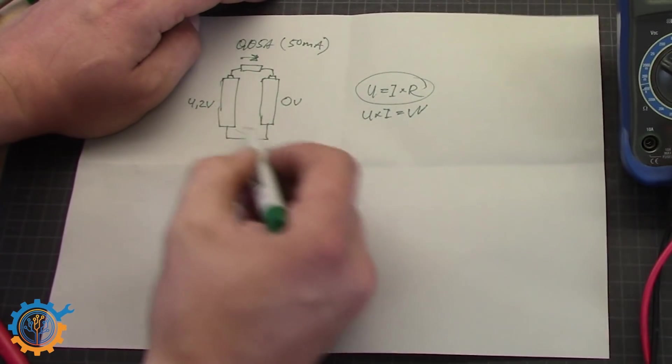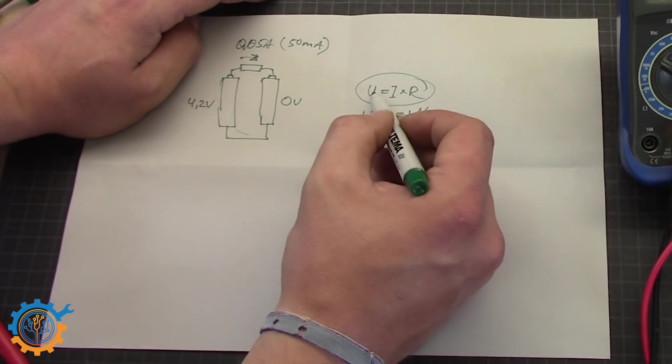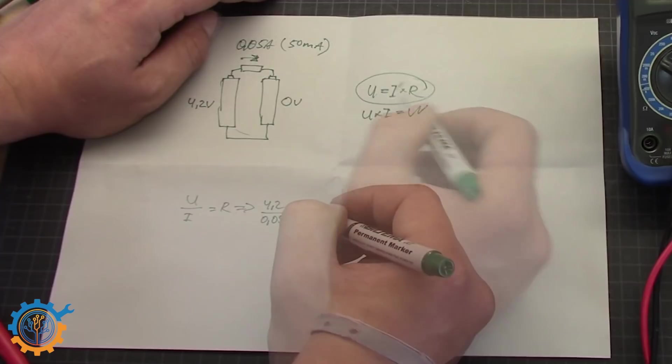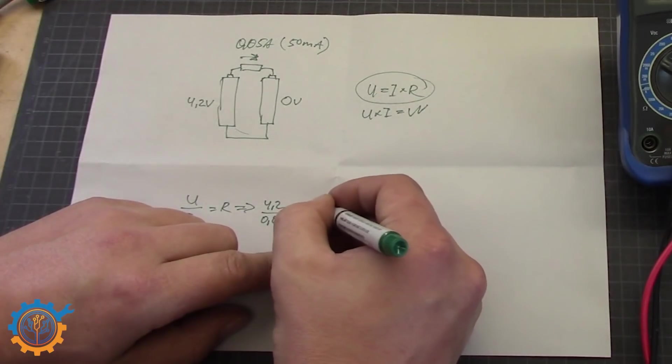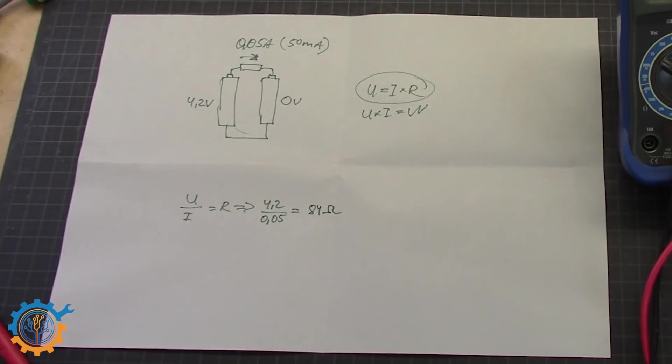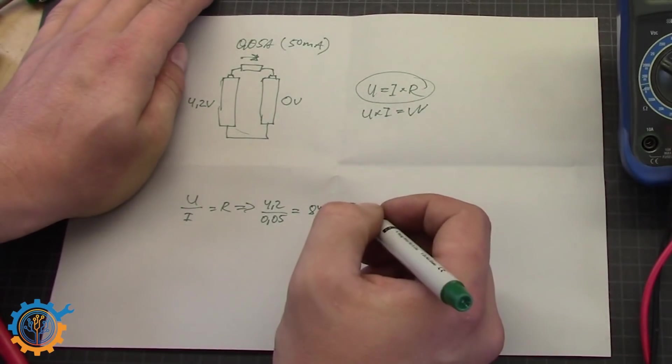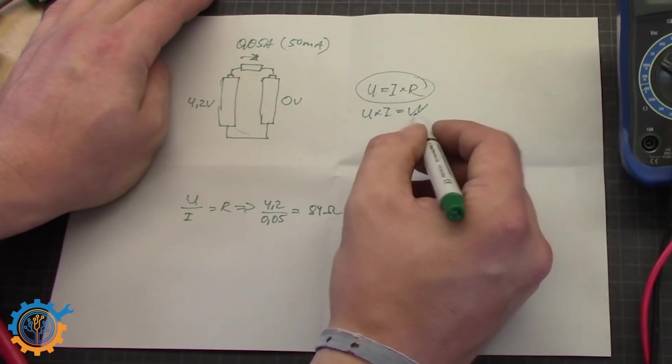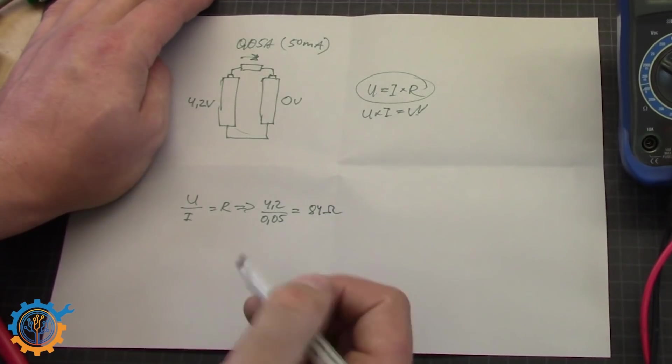And we know the current is 0.05A. The result of 84 ohm. To divide this to the current so it cannot exceed 50mA. We need a resistor of 84 ohm. But to pick this resistor we need to know the wattage of the current flowing as well.